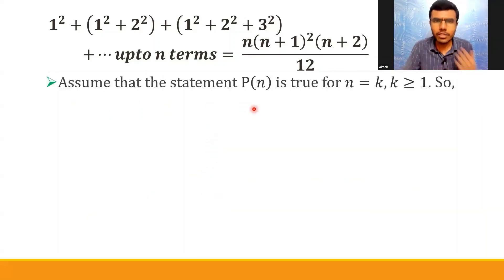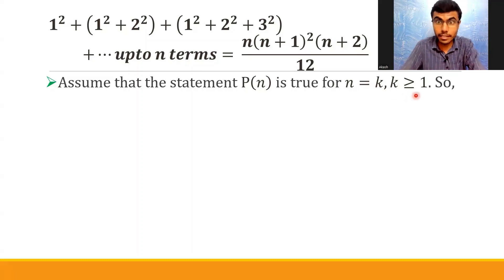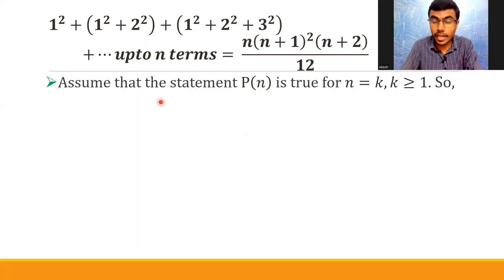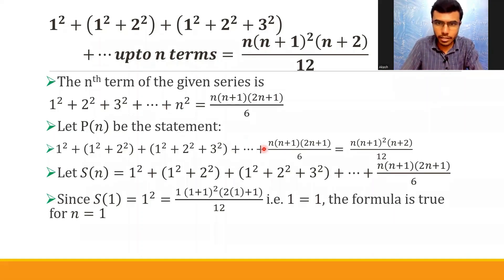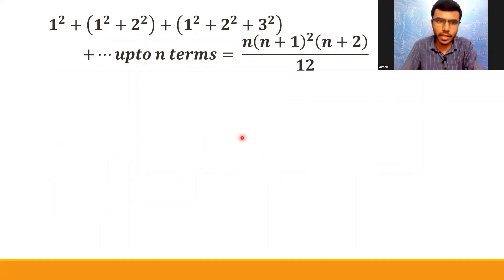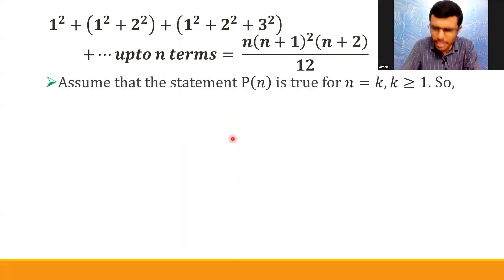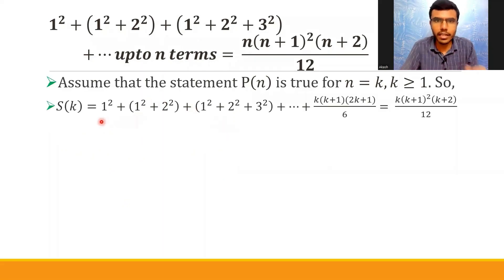Next, assume that the given statement is true for n = k, where k ≥ 1 — don't forget to mention that. Therefore, since that equation is true for n = k, I can just put k in place of n.